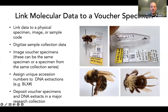Voucher specimens and images should be deposited in major museum collections and well-supported online databases. Shown here are images of a voucher specimen of Bombus franklini. In this case, I used one leg for DNA extraction and took phone images of the specimen, its labels, and the tissue used for extraction. I also took higher quality profile and dorsal images of the voucher. This specimen is owned by and located at the Bohart Museum of Entomology at UC Davis, where it will hopefully stay forever.